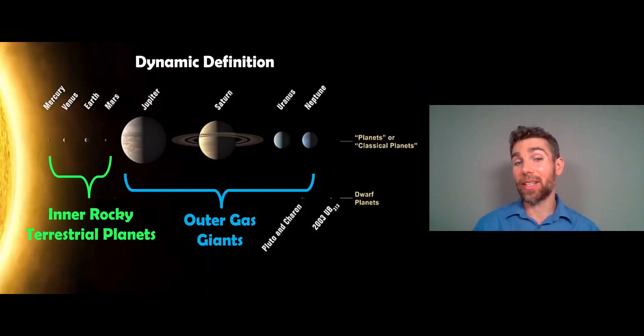Now the dynamic definition places them in the inner part of the solar system. So this is where the inner rocky terrestrial planets are, and then you have your outer gas giants. Whereas the dynamic definition says that they're earth-like as well as where they are, not just their composition.